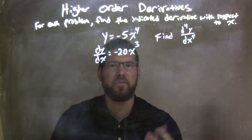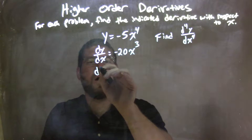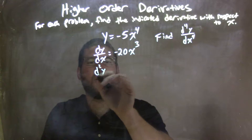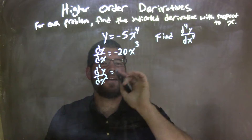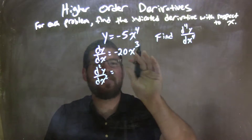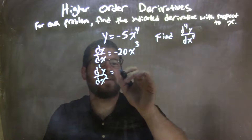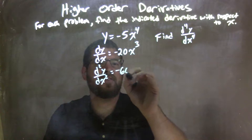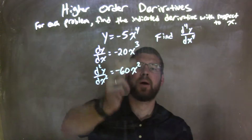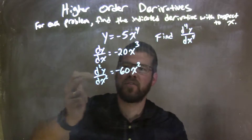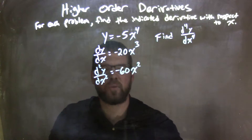That's the first derivative. Now I need to find the second derivative — d squared y over dx squared. Again, I have to use the power rule. 3 times 20 is 60, so we have a negative 60 right there because it's negative 20. x squared — reduce the exponent by 1. So our second derivative is negative 60x squared.